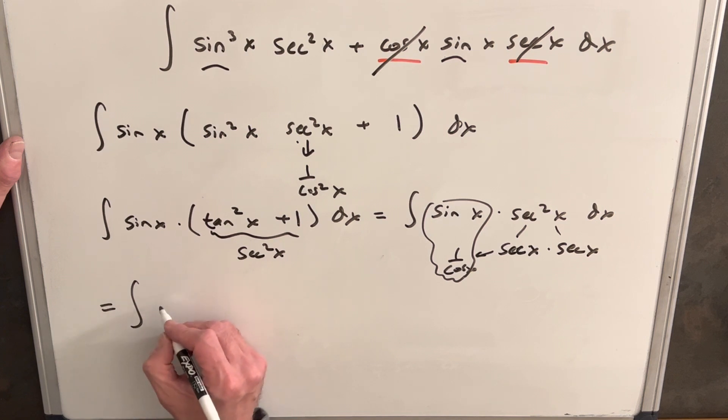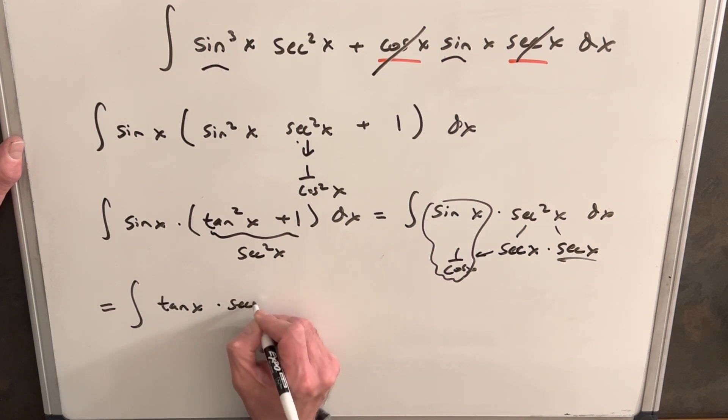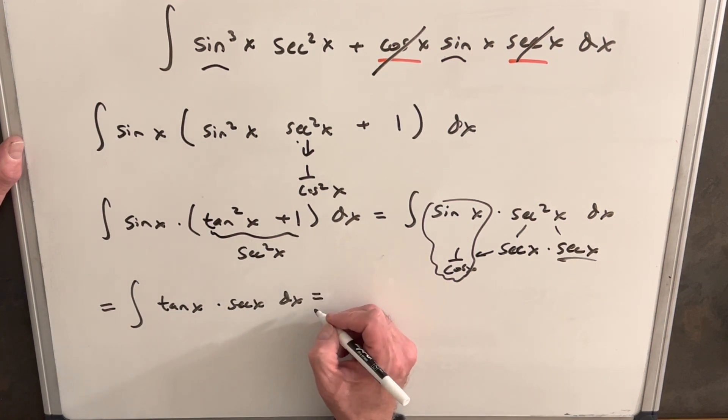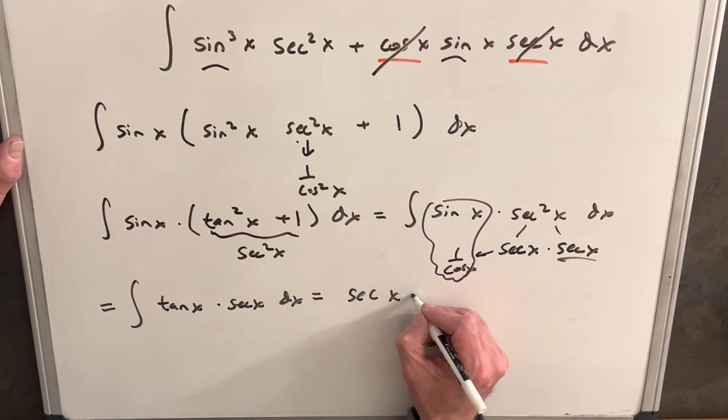So we'll rewrite this, and we're going to have this piece as tan x times the secant we have left over here, secant x dx, but the integral of this is just going to be secant x plus c, and we're done.